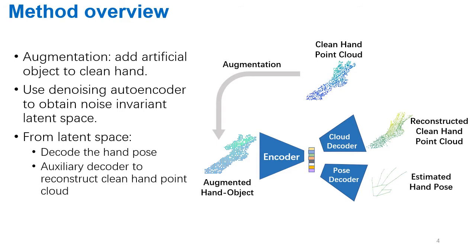Here is an overview of our method. The input data is the point cloud data of the clean hands taken from clean hand datasets. Using the clean hand samples, we augment them to add artificial objects to the hand. The augmented input will be encoded to a low-dimensional latent vector and further decoded with two separate decoders. The pose decoder estimates the hand pose in Cartesian space, which is our main goal. An auxiliary cloud decoder will reconstruct the clean hand point cloud, which plays the role of the denoising autoencoder.